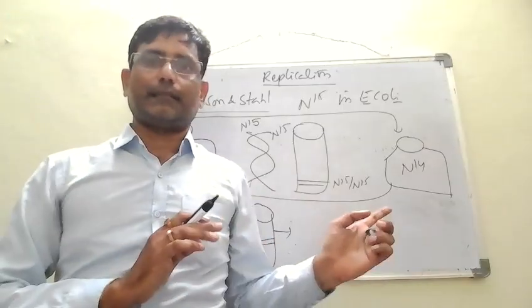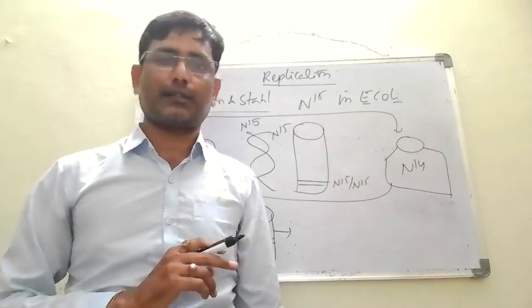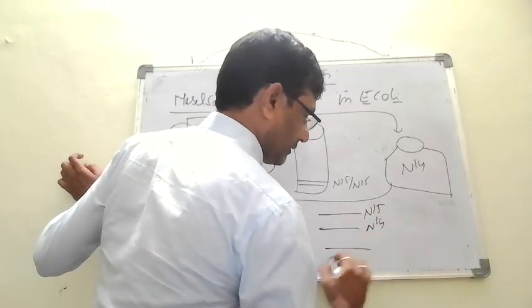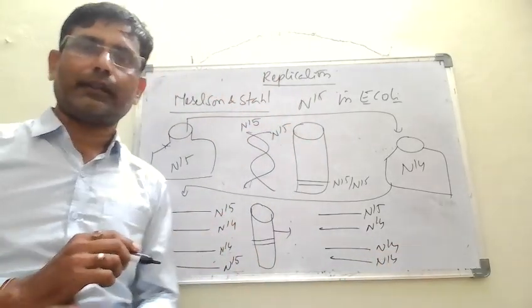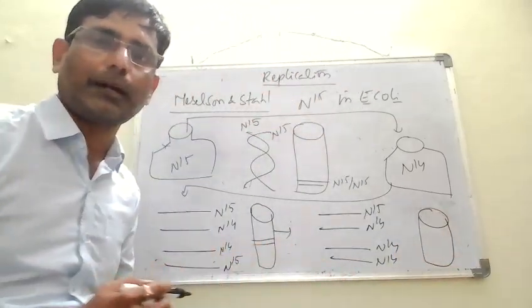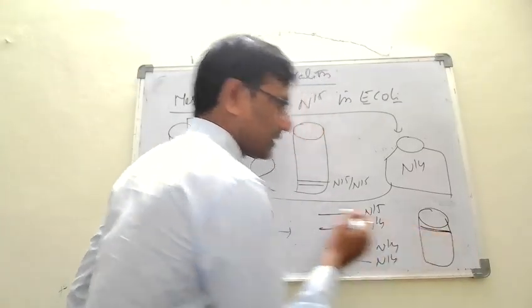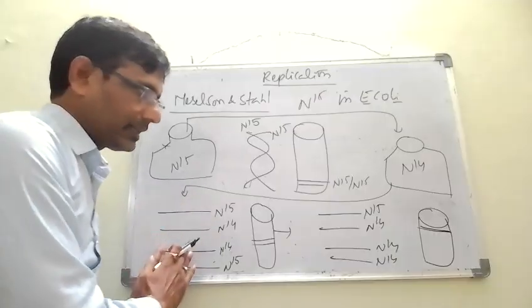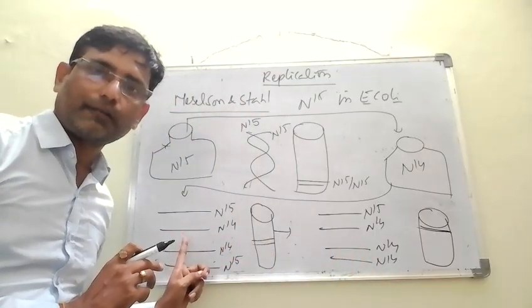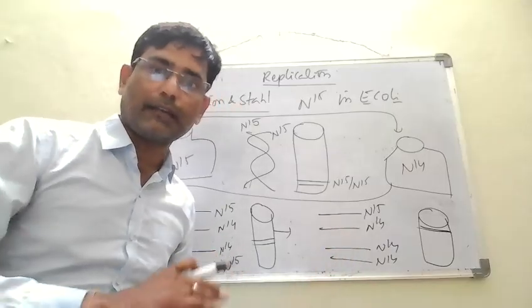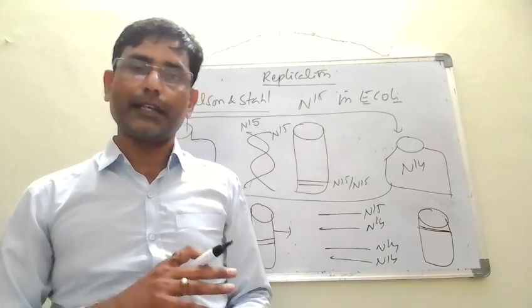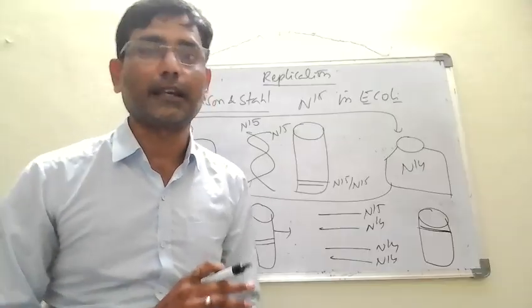They extracted DNA from this culture after 40 minutes, indicating the second generation. They got 50% hybrid DNA and 50% light DNA. This light DNA is separated by density gradient centrifugation and the bands are formed at the top of the test tube. Comparing first and second generation: in the first generation we have 100% hybrid DNA; in the second generation we have 50% hybrid DNA and 50% light DNA — decreasing hybrid DNA and increasing light DNA — that indicates semi-conservative DNA replication.